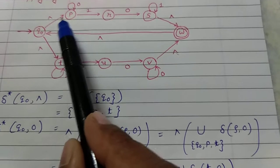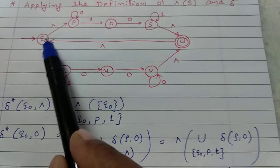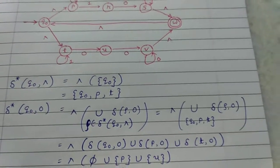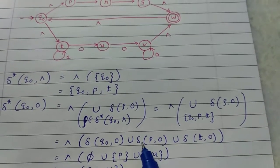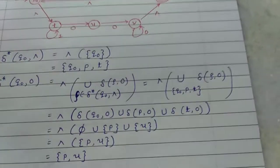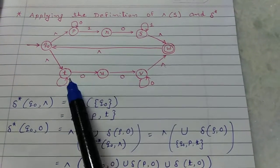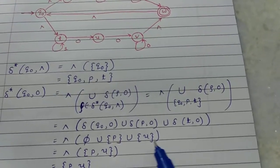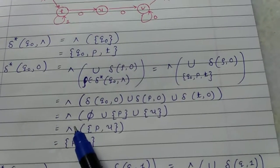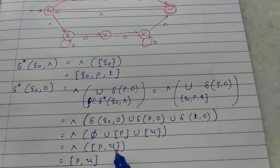From Q0 on input 0 there are no transitions, so that is empty. From P on input 0, we reach state P itself. From T on input 0, we reach state U. So we need to find the epsilon closure of {P, U}.